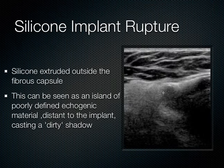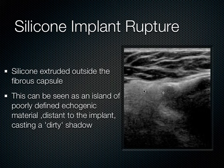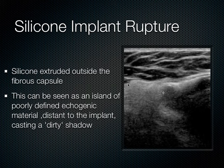When rupture does occur, with a silicone implant the silicone extrudes outside the fibrous capsule, appearing as poorly defined echogenic material distant to the implant with a dirty shadow — a sign of silicone implant rupture. If it's a saline implant rupture, it looks like anechoic free fluid seen in different tissue layers.